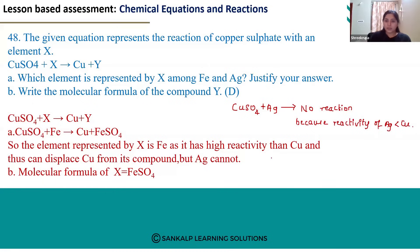But Fe can displace copper from its solution and we can observe the formation of elemental copper and FeSO4 because here the reactivity of iron is more than the reactivity of copper and more reactive element can displace less reactive element from its compound. That is why we can observe the formation of elemental copper and FeSO4.